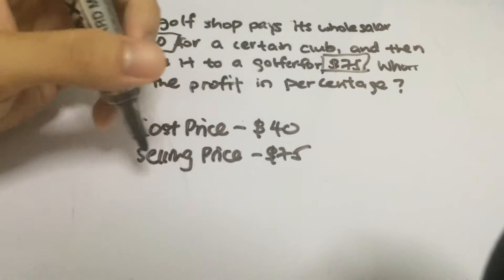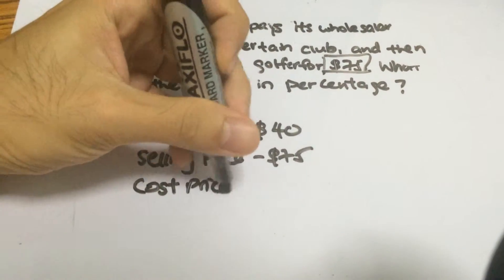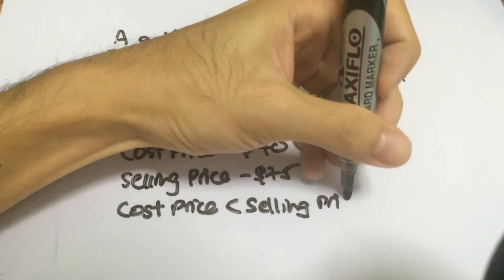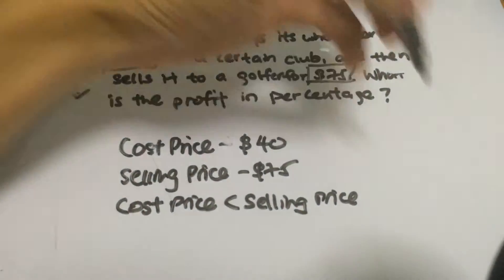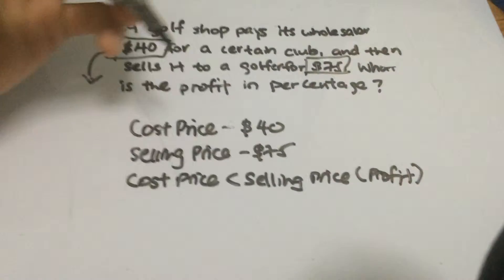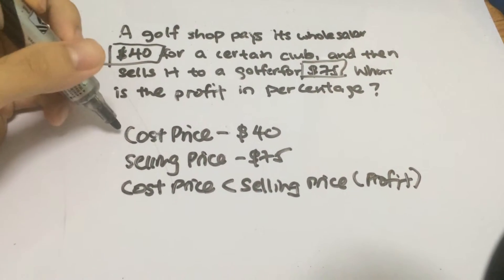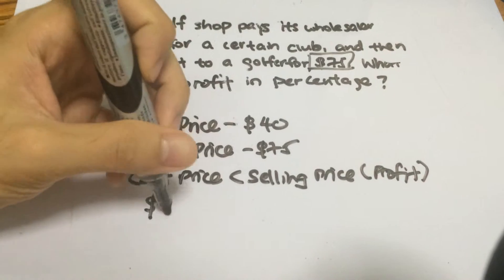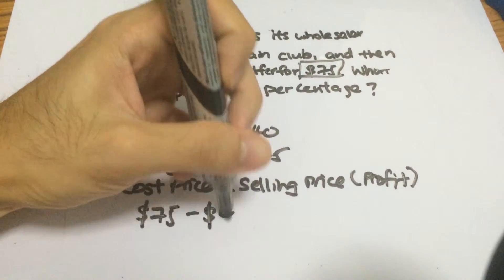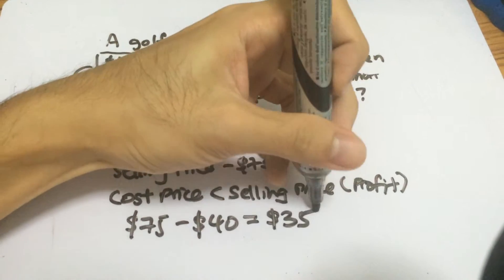Because the cost price is less than the selling price, you will have a profit. The profit is equivalent to the selling price minus the cost price, which is $75 minus $40, and that is equal to $35. So $35 is your profit.